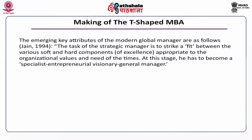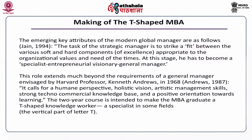The emerging key attributes of the modern global manager, as quoted by Jane (1994): the task of the strategic manager is to strike a fit between the various soft and hard competencies of excellence appropriate to the organizational values and needs of the time. At this stage, the manager has to become a specialist-entrepreneurial-visionary general manager. This role extends much beyond the requirements of a general manager envisaged by Harvard professor Kenneth Andrews (1968, 1987). It calls for a humane perspective, holistic vision, artistic management skills, strong techno-commercial knowledge base, and a positive orientation towards learning. The two-year MBA course is intended to make the graduate a T-shaped knowledge worker — a specialist in some fields (the vertical part of the T) and a generalist in all areas (the horizontal part of the T).